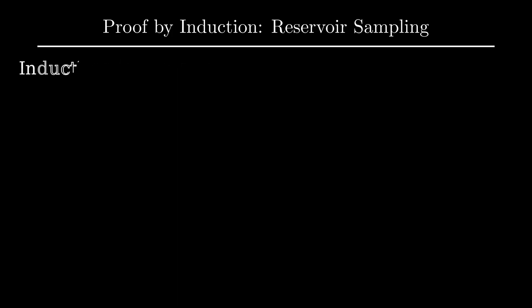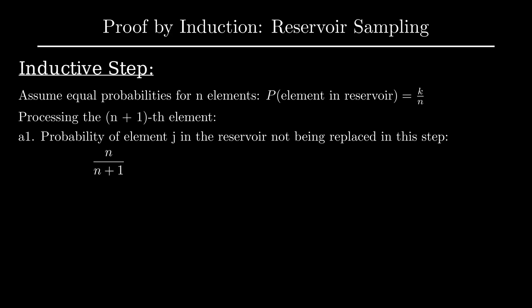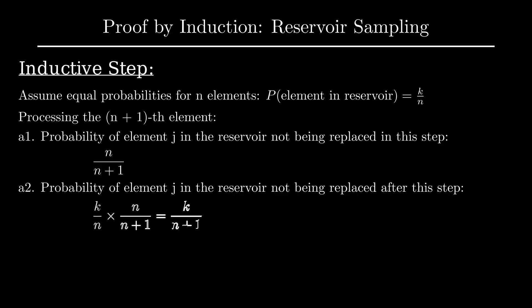For the inductive step, we assume we have equal chances for all n items seen so far. Hence, the probability that a particular member of the stream so far is in the reservoir is k divided by n. Processing the n plus 1 element does the following. An index j of the reservoir is not replaced at this step in n divided by n plus 1 cases. The replacement happens only when the random number generated is exactly j with a probability of 1 divided by n plus 1. The same index j had a k divided by n chance up until now of being here. After processing the last element, the updated probability is k divided by n plus 1.